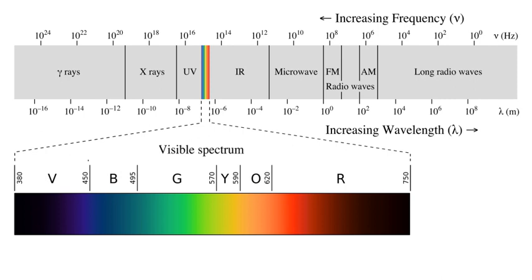The wavefront of electromagnetic waves emitted from a point source is a sphere. The position of an electromagnetic wave within the electromagnetic spectrum can be characterized by either its frequency of oscillation or its wavelength. Electromagnetic waves of different frequency are called by different names since they have different sources and effects on matter.